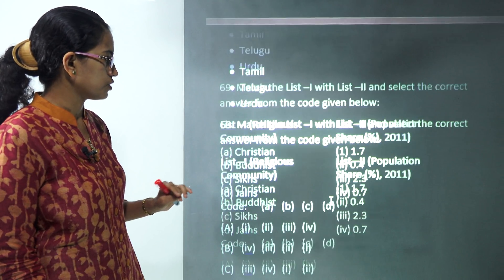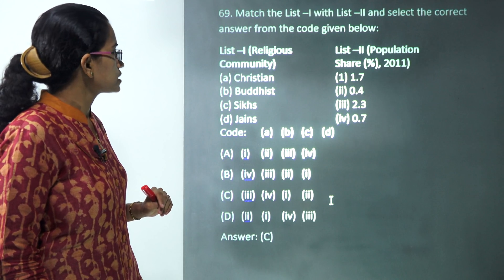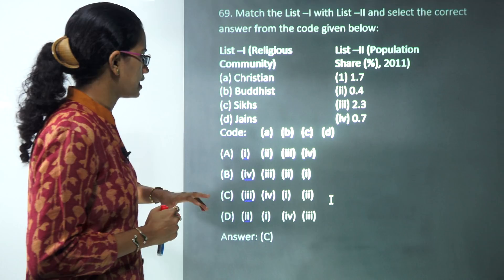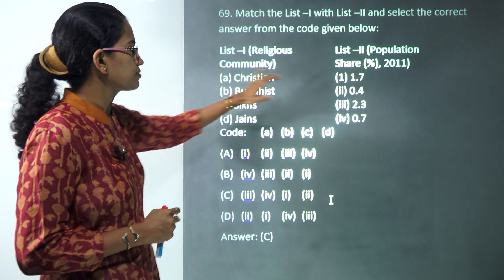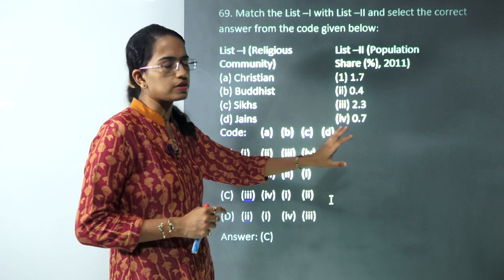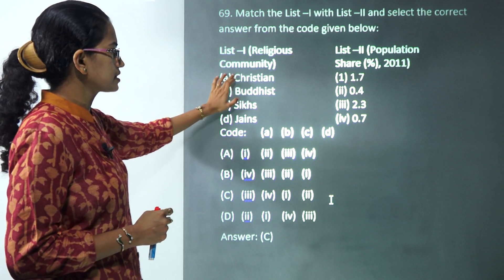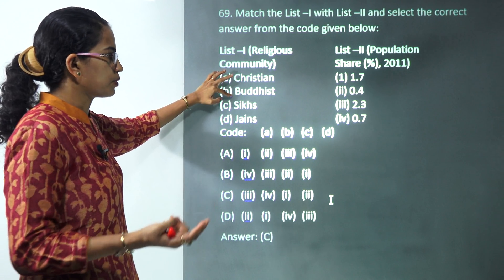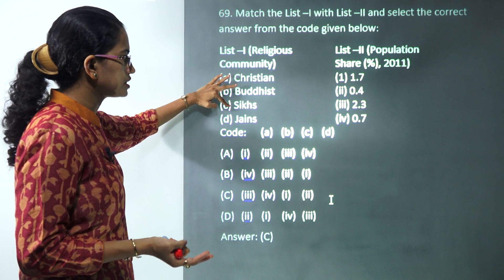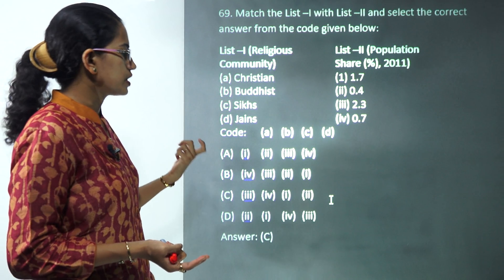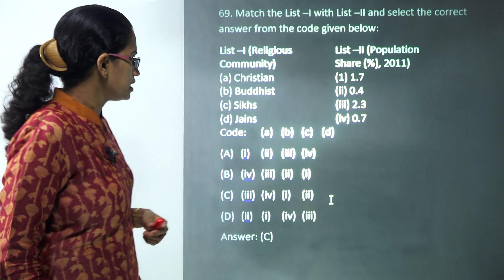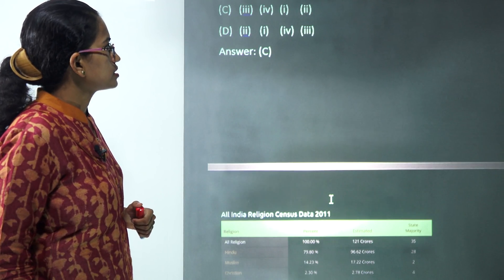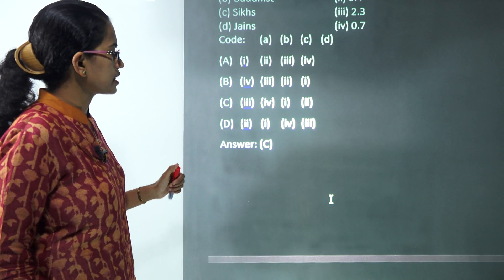India officially has 22 recognized languages, and the list of those 22 languages is provided here. The next question covers religious demographics and percentages for minority religions. Among the minorities, Christians are the largest at 3.2%, followed by Sikhs at 1.7%, Buddhists at 0.7%, and Jains at 0.4%. Those are the correct matches.